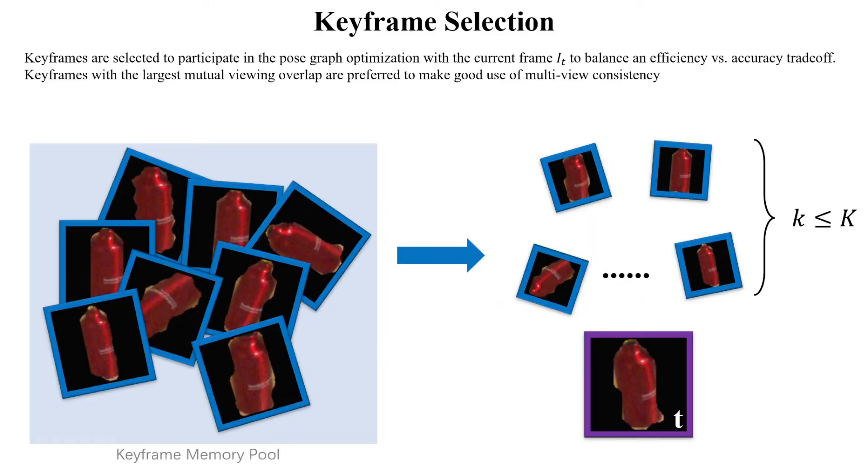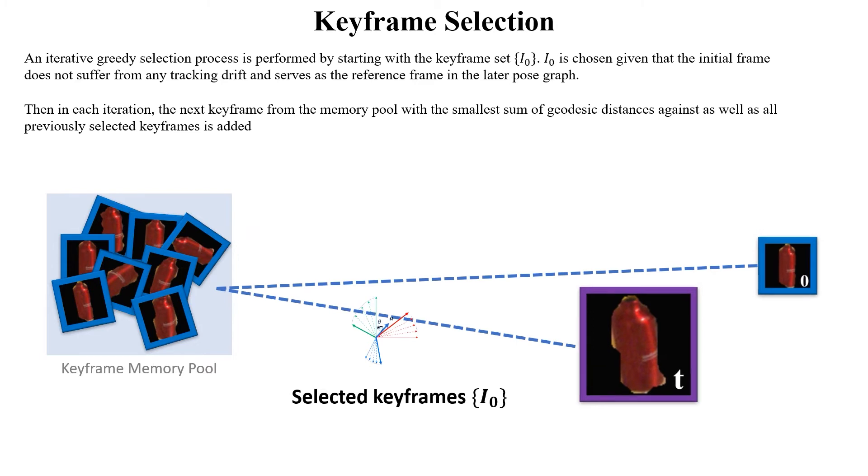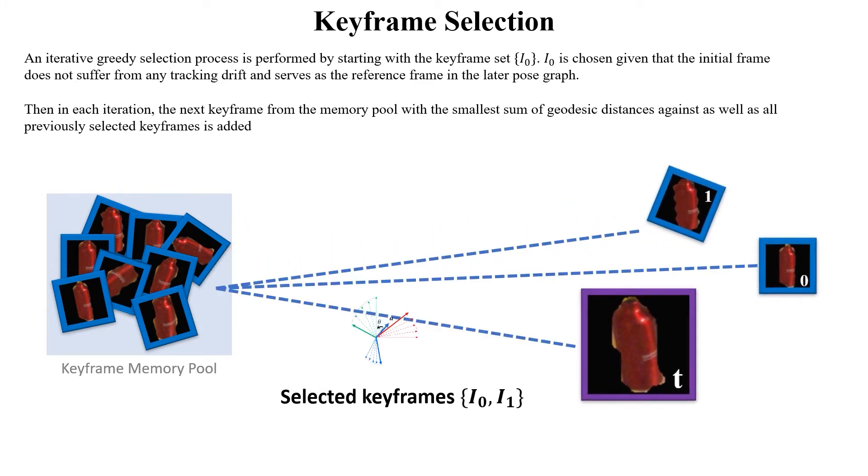Keyframes are selected to participate in the pose graph optimization with the latest frame to balance an efficiency versus accuracy trade-off. An iterative greedy selection process is performed by starting with the keyframe set zero. This is repeated until a desired number of keyframes is obtained.